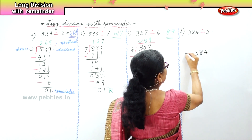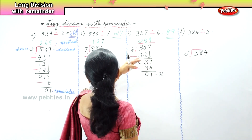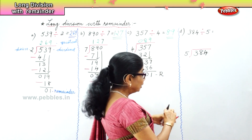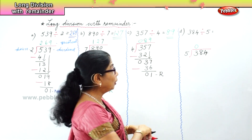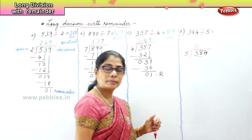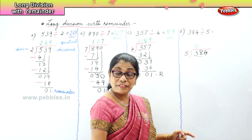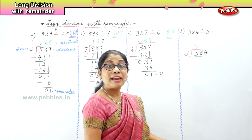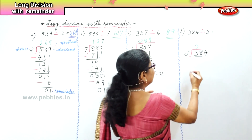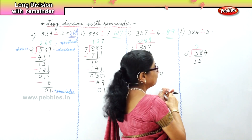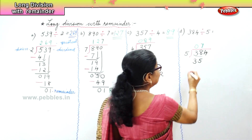384 divided by 5. The first digit 3 is smaller than the divisor 5, so we put a 0 on top and take the two digits together — 38. Five 7s are 35, so 5 goes into 38 seven times. Put 7 on top and write minus 35.